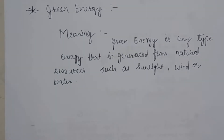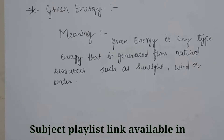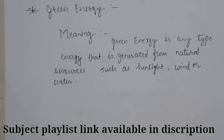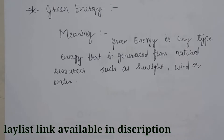So green energy means energy that is generated from natural resources such as sunlight, wind, and water. The amount of fumes and waste material produced does not harm nature.